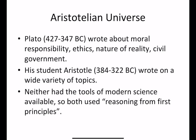Aristotle and Plato are well known. Plato lived 427–347 BC and wrote about ethics, nature of reality, and civil government. His student Aristotle lived 384–322 BC and is considered the father of modern philosophy. Unfortunately, almost everything Aristotle figured out in science is wrong, mainly because he did not have the tools of modern science — he did not know the scientific method, which was gradually discovered over time.